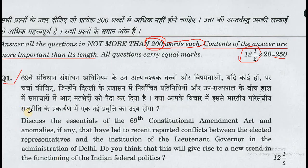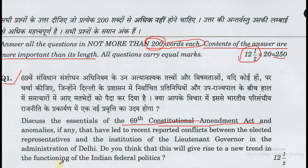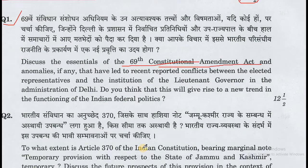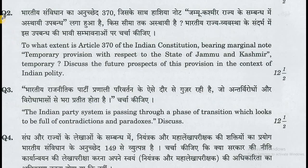Question number 1: Discuss the essentials of the 69th Constitutional Amendment Act and anomalies, if any, that have led to recent reported conflict between the elected representatives and the institution of the Lieutenant Governor in the administration of Delhi. Do you think that this will give rise to a new trend in the functioning of Indian federal politics?